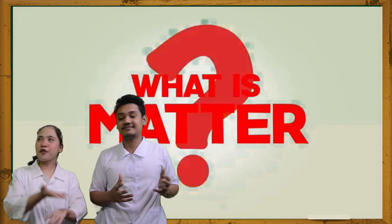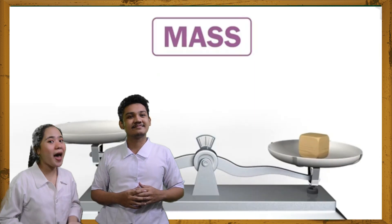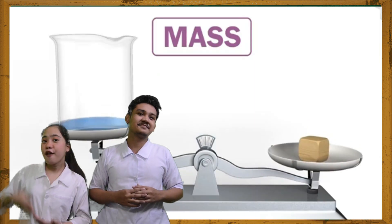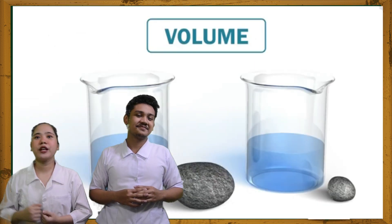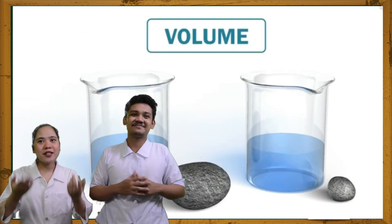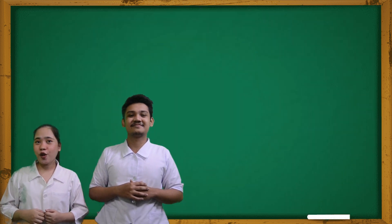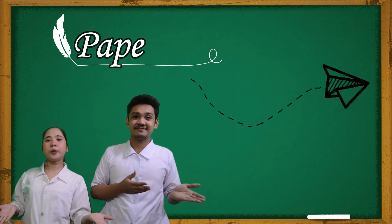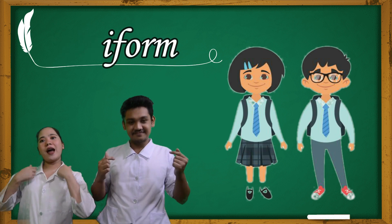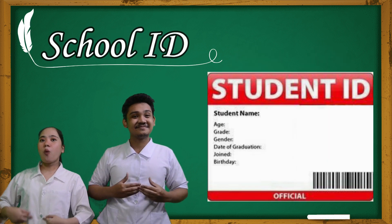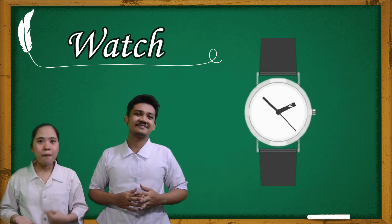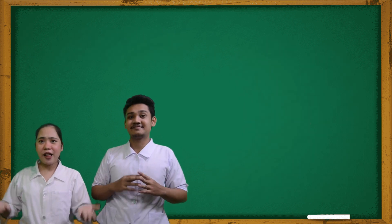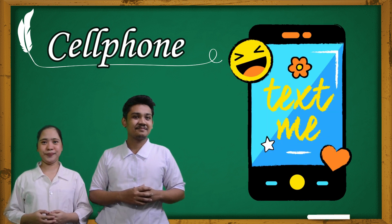Matter is everywhere. It has mass and volume. The things that you use in your classes such as your pen, your paper, the uniform, your ID, watch, board, and cell phone are forms of matter.